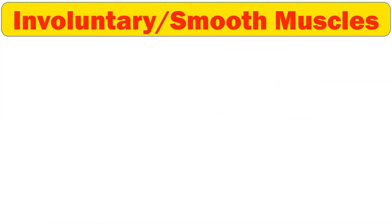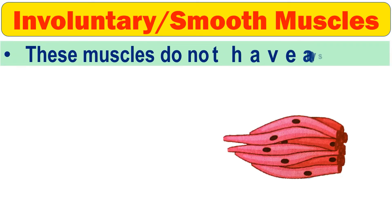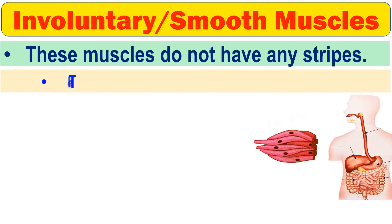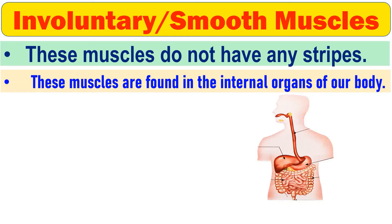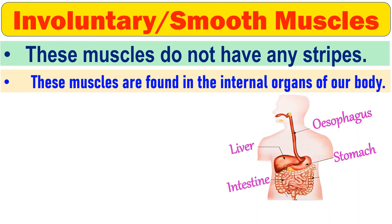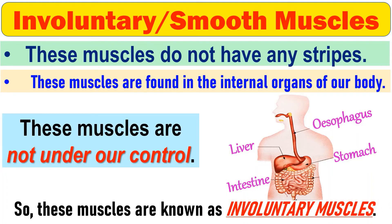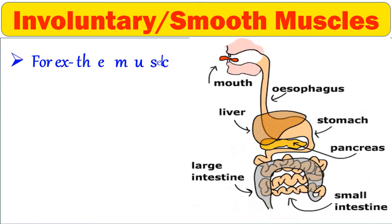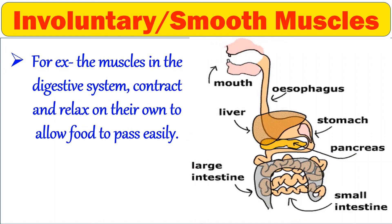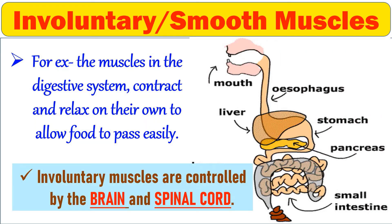The second type is involuntary or smooth muscles. These muscles do not have any stripes. They are found in the internal organs of our body such as the esophagus, liver, stomach, or intestine. These muscles are not under our control, and so they are known as involuntary muscles. For example, the muscles in the digestive system contract or relax on their own to allow food to pass easily. Involuntary muscles are controlled by the brain and spinal cord.